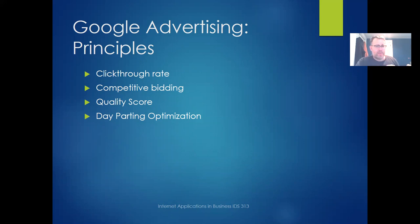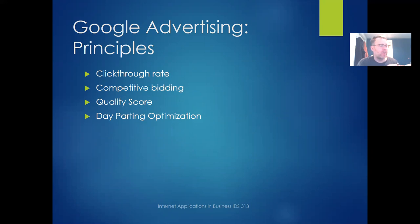Google looks at all that to develop a quality score for the ad. Basically, it's a long-run estimation of how much money Google will get from the ad, or how many clicks. So Google wants to maximize the product of the bid times the number of clicks. An ad that gets a lot of clicks but has a low bid isn't doing much, and likewise a high bid with no clicks does nothing. Those two factors together determine where the ad gets shown. Google wants to show the best ads in the best places. One strategy firms can use to optimize is day parting — figuring out that some ads perform better at certain times of day.